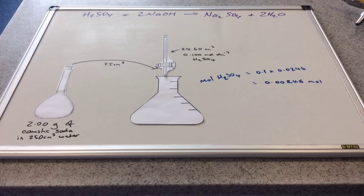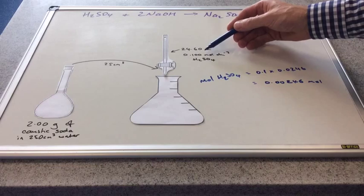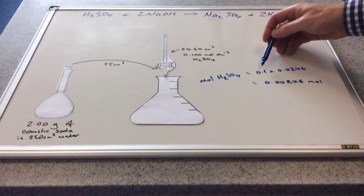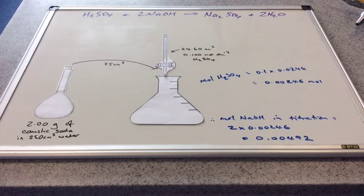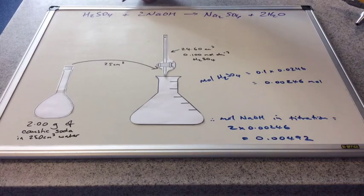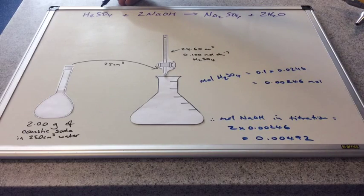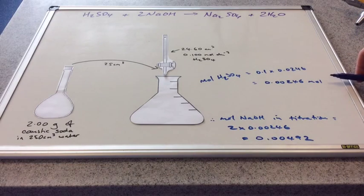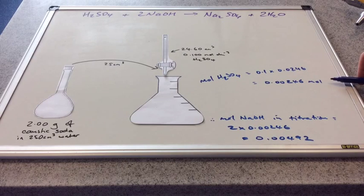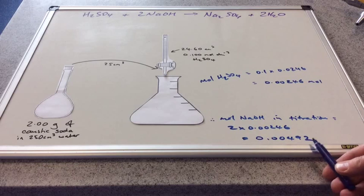The first thing we need to do is calculate the moles of sulfuric acid used in the titration, because we have all the information to work it out. We've got the concentration and volume, so moles of sulfuric acid equals concentration times volume in decimetres cubed, coming out at 0.00246 moles. Using the mole ratio, one mole of sulfuric acid needs two moles of sodium hydroxide, so we get 0.00492 moles of sodium hydroxide in the titration flask.